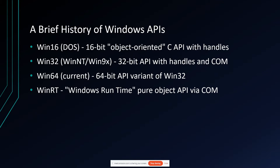We started with Win16 on DOS, which is 16-bit. It's object-oriented in quotes — it's a C API, and objects are represented by handles. When you want to make a method call, it's basically a C function call with the handle as the first argument. With Win9x and Windows NT we got Win32, which is a 32-bit API but still uses handles. In Win32 they started introducing services through interfaces exposed via COM.